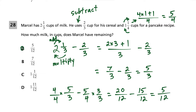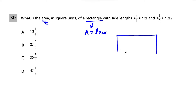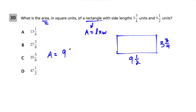Question 30. What is the area of a rectangle with side lengths 3 and 3/4 units and 9 and 1/2 units? Area equals length times width. It's tempting to just multiply 9 × 3 and then 1/2 × 3/4 separately, but that gives choice B — a dangerous bear trap. We must convert both mixed numbers to improper fractions first.